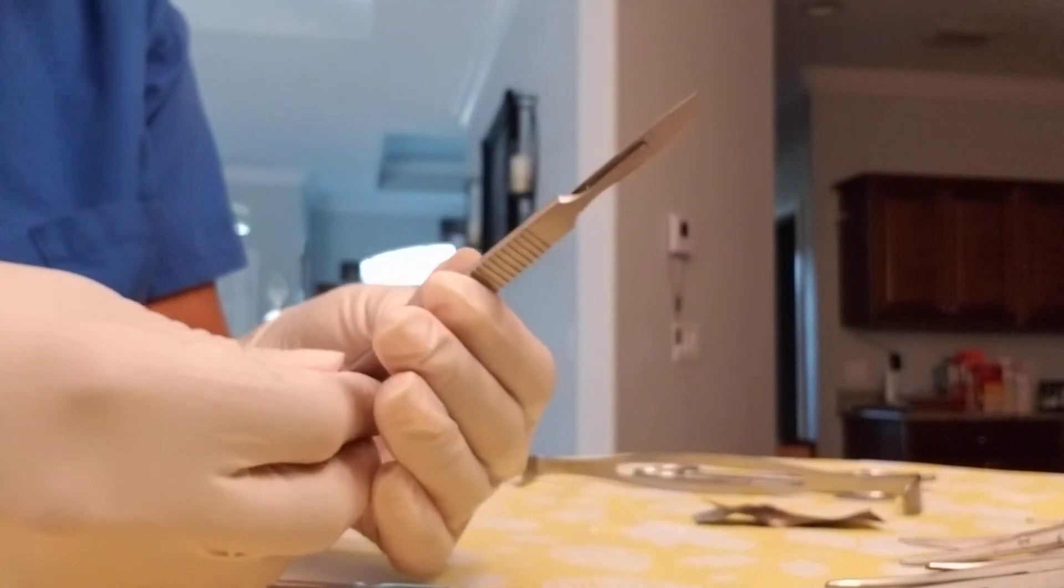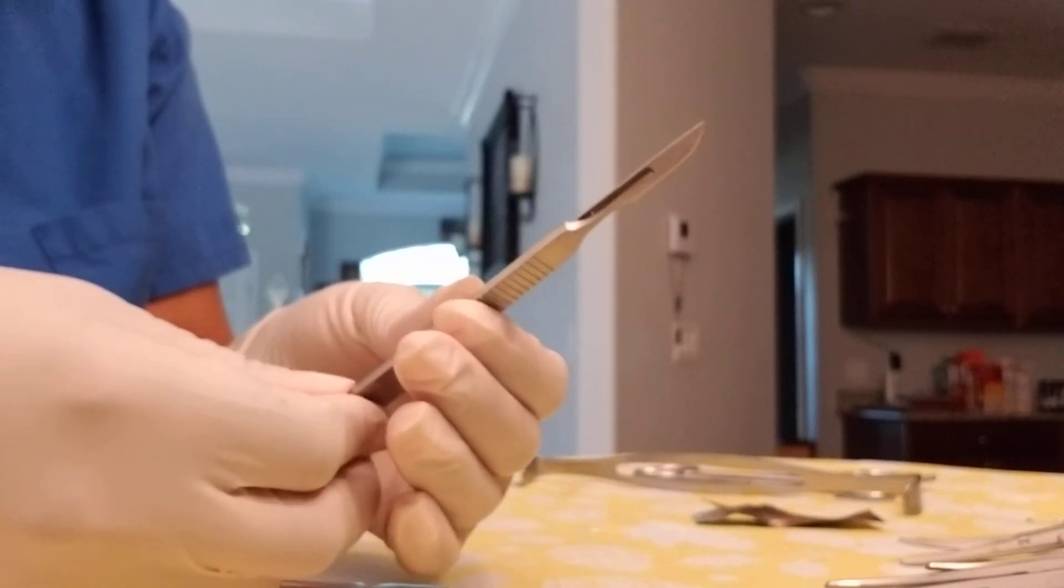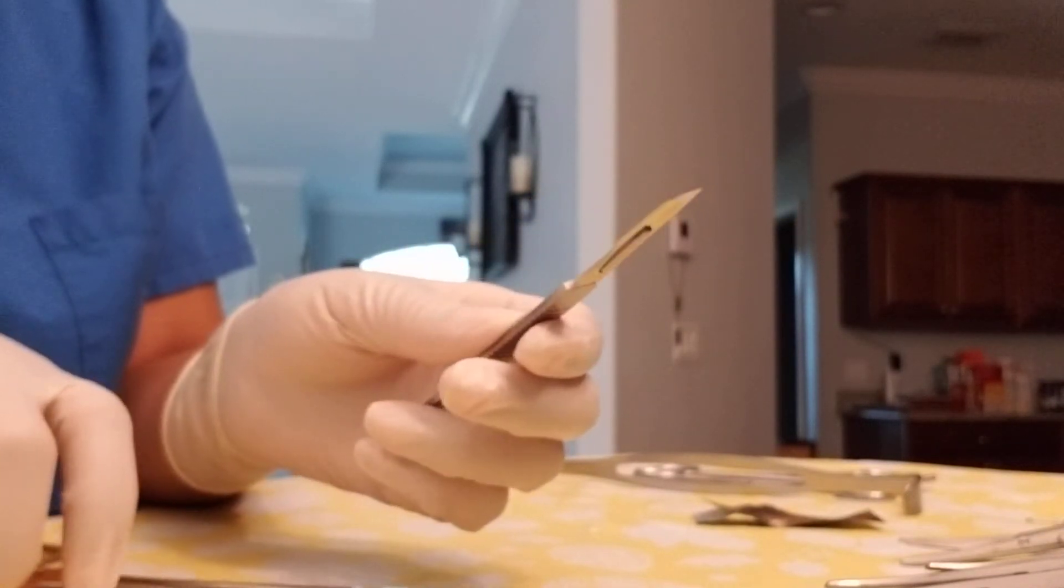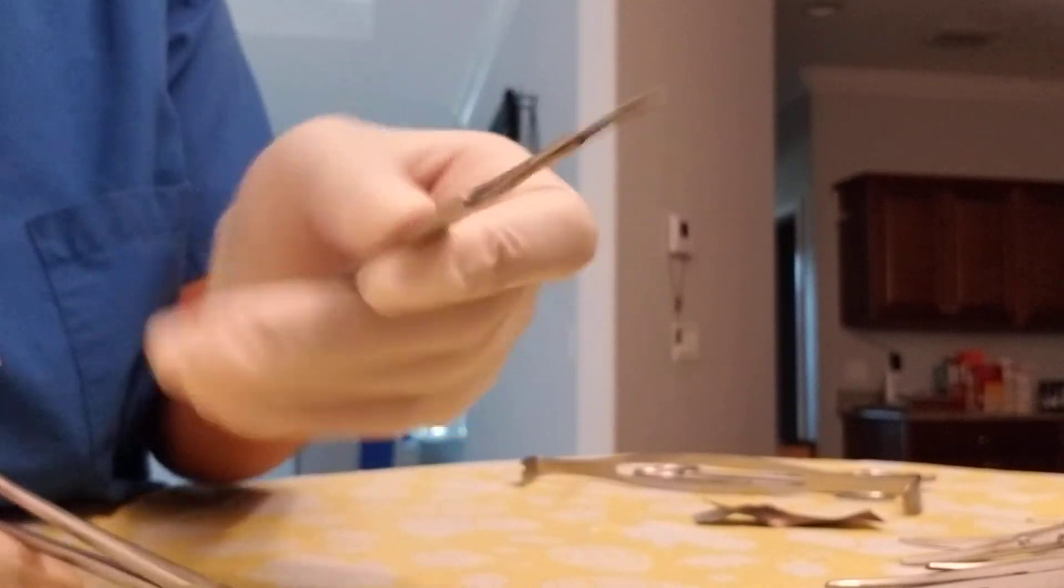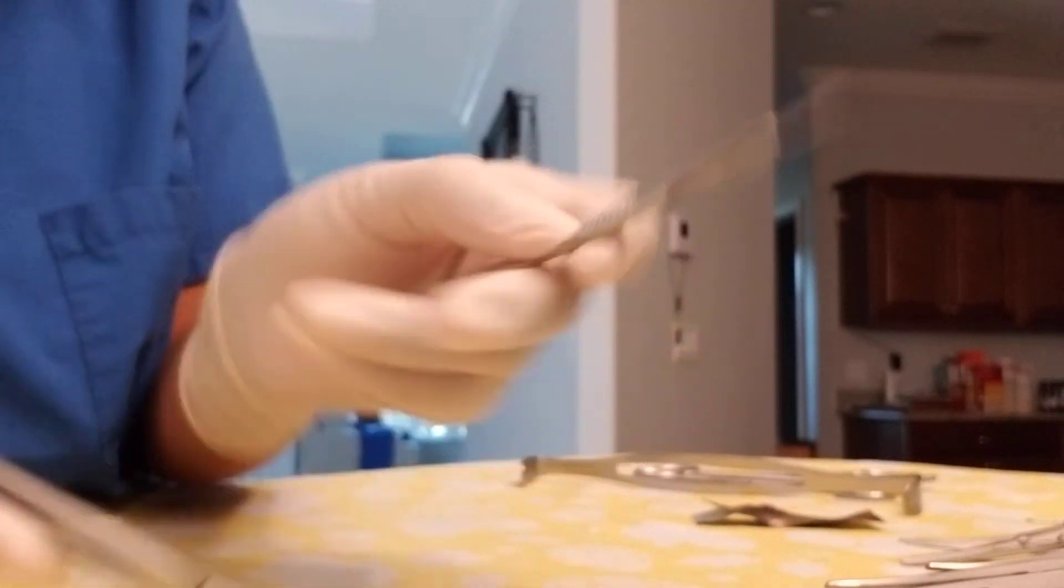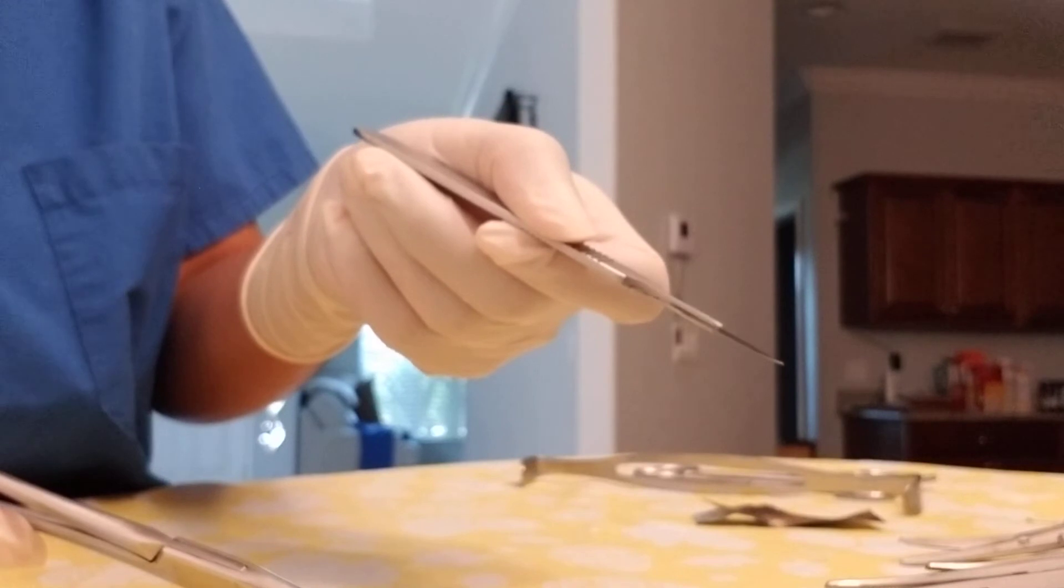To take the blade off, you're going to turn it upside down, so now you have the smooth side up. Point your blade down because you don't want it up where it could fly across the room.